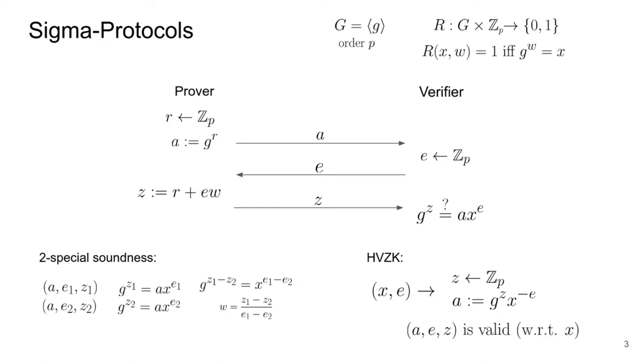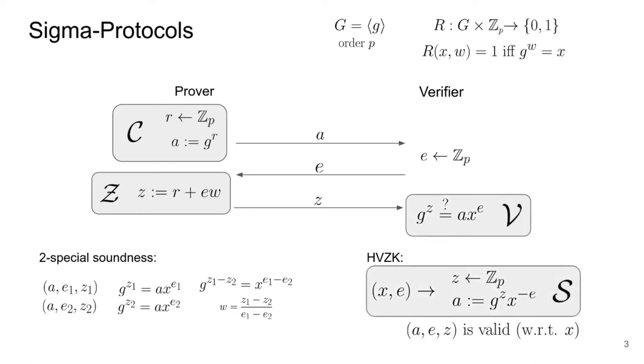In the rest of this talk, we will denote by capital C and Z the algorithms run by the prover, and we will denote by V the final check by the verifier. We also denote by S, which stands for simulator, the algorithm that produces a valid transcript from x and e. In general, the syntax of these algorithms is as follows. Note that algorithm C is allowed to use x and w in general, although in the example these values were not used to compute a.